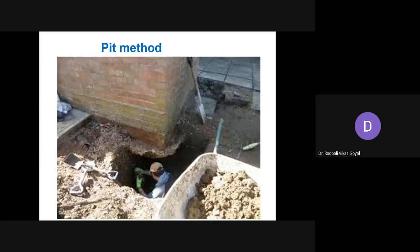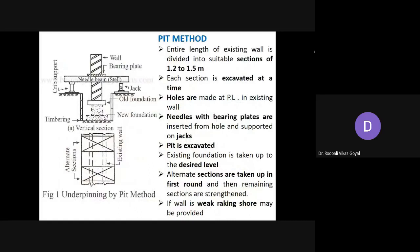In the pit method, the entire length of the existing wall in plan is divided into suitable sections of 1.2 to 1.5 meters. Generally alternate sections are excavated at a time. The existing wall sits on the old foundation which needs strengthening. The load of the structure from the existing wall has to be diverted — this is done using a needle beam, which is a steel section inserted through holes made at plinth level.